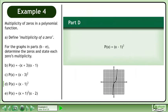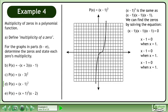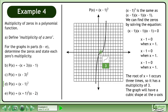In part C, we have the graph of p(x) = (x - 1) cubed. (x - 1) cubed is the same as (x - 1) times (x - 1) times (x - 1). We can find the zeros by solving (x - 1)(x - 1)(x - 1) = 0. x - 1 = 0 when x = 1, x - 1 = 0 when x = 1, and x - 1 = 0 when x = 1. The root x = 1 occurs 3 times, so it has a multiplicity of 3. The graph will have a cubic shape at the x-axis.